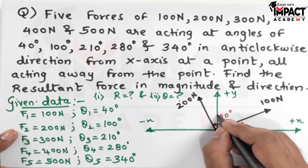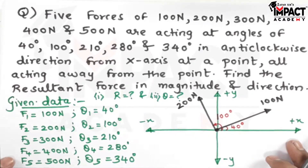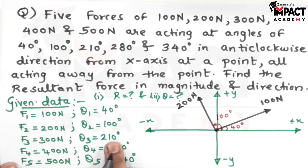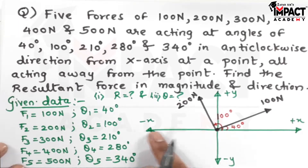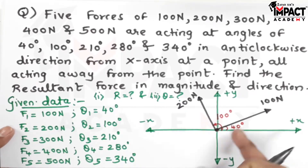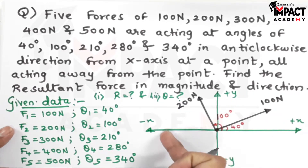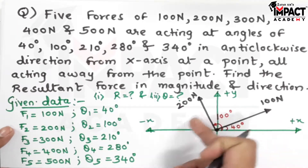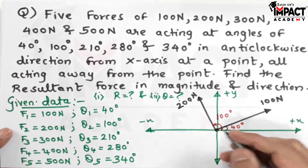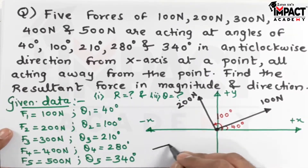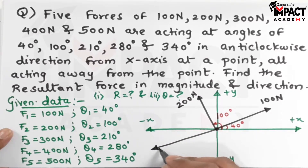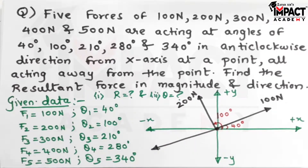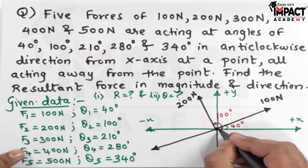The next force is 300 N at 210°. Since the horizontal line is 180°, measuring 30° further in the anti-clockwise direction gives 210°, placing this force into the third quadrant.